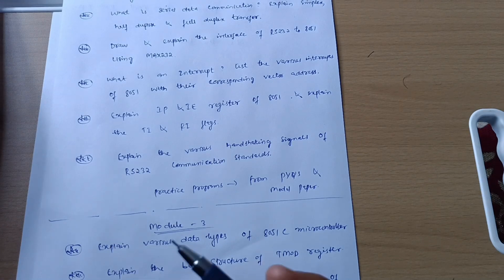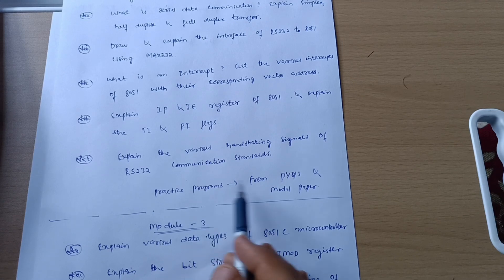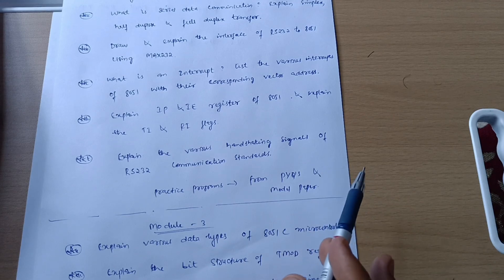Also if you are convenient with the programmatic part, as this subject is the combination of both numericals as well as theoretical portion, these were theoretical portions. If you are convenient with the programmatic part, go through the previous question papers which I mentioned already - 21EE43 and 18E52 and also refer model question paper.